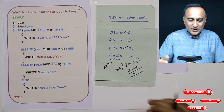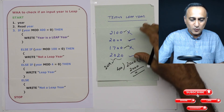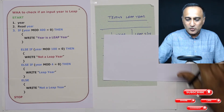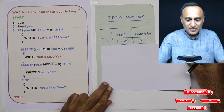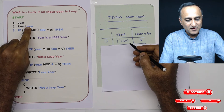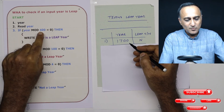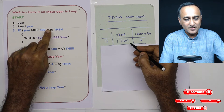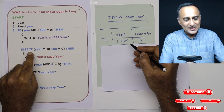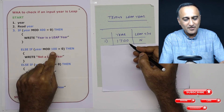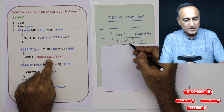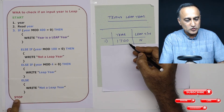To understand the working of this algorithm better, let's run through a few sets of data. Take the year 1700: 1700 mod 400 equals zero? No, the remainder is 100, so this condition is false. It will come to the else if: 1700 mod 100 — 1700 is divisible by 100, remainder is zero — so it is going to print not a leap year, and then stop.